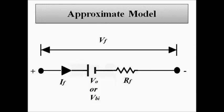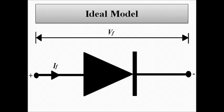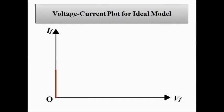Here we have discussed the three types of equivalent model representations of a PN junction diode: the approximate model, the simplified model, and the ideal model, along with the voltage-current characteristics associated with each. In my next video I will be discussing the voltage-current characteristics in the forward and reverse bias regions of a PN junction diode. I hope you liked this video — please subscribe to Engineering Tutorial for more videos on electrical, electronics, instrumentation, and communication engineering. Have a great day, thank you very much.